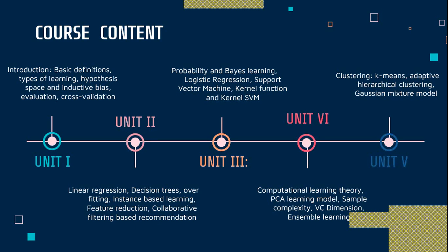In this subject, we have unit number 1, 2, 3, 4, and 5. In unit number 1, we will cover the introductory basic definitions, then the types of learning, then the hypothesis phase and data bias, and evaluation and consolidation.